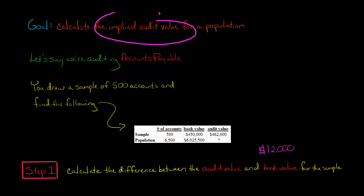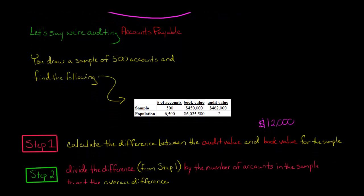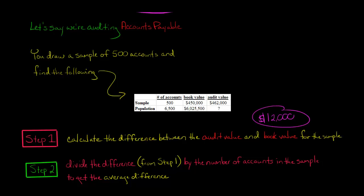In step two, take that difference - this $12,000 - and divide it by the number of accounts for the sample. There are 500 accounts in the sample, so you're basically getting the average difference. We divide the $12,000 by the number of accounts. If you do that, you get 12,000 divided by 500, which equals $24.